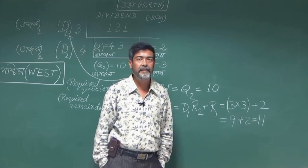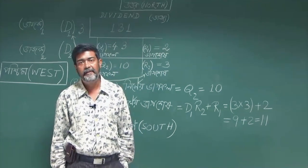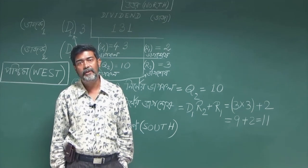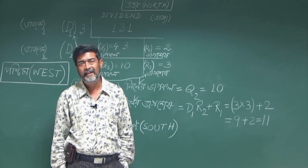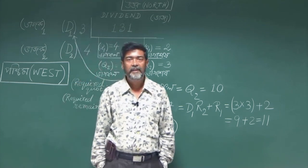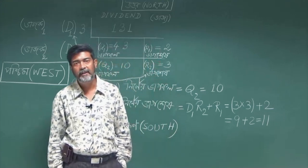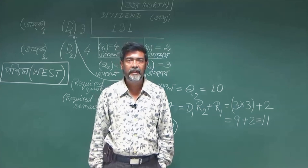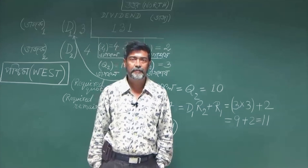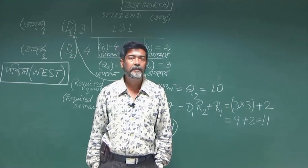Now the question is: if a student asks why q2 is the final quotient when we divided 12 by first dividing by 3 and then by 4 in succession — why is that the final quotient? And why is d1·r2 plus r1 such an unusual expression for the final remainder?